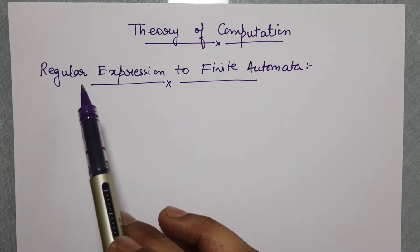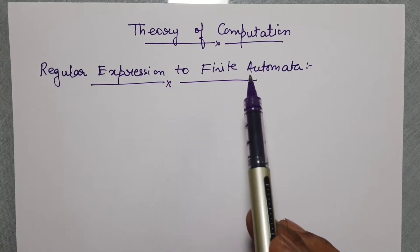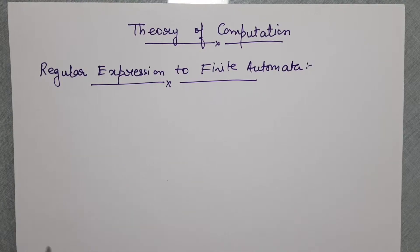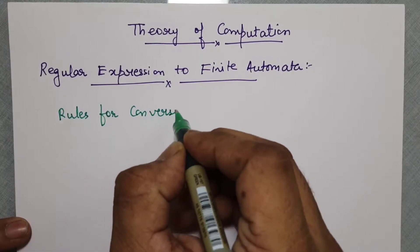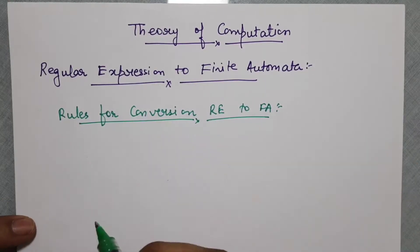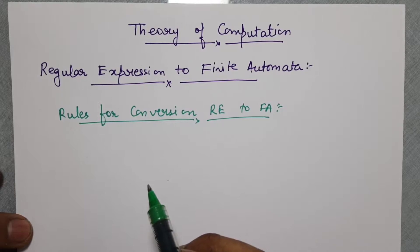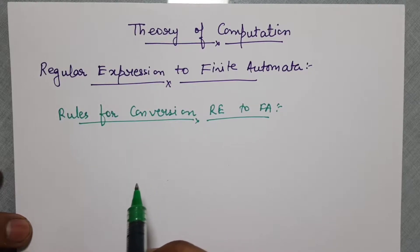In this video, we are going to see regular expression to finite automata conversion. There are basically three rules for converting a regular expression to a finite automata. Let us see the three rules and understand when they are applied.